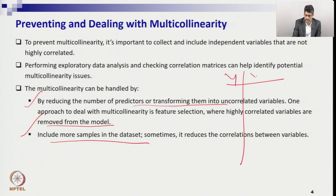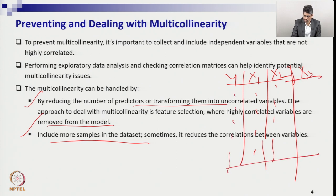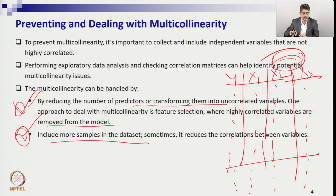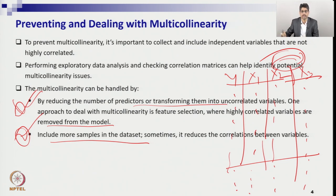Another option to handle multicollinearity is to increase the sample size. Suppose you have a dataset with y, x1, x2, and you are fitting regression on 20 samples and found multicollinearity between x2 and x3. You could either delete x3, or increase the sample size by collecting more data. In that case, you might find that the multicollinearity reduces or disappears. Increasing sample size can help reduce multicollinearity and the corresponding VIF.